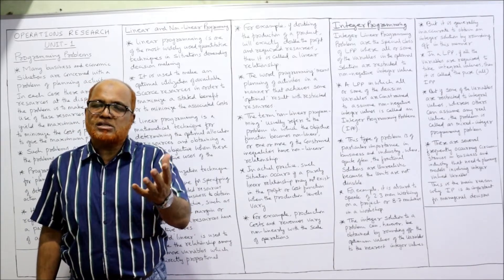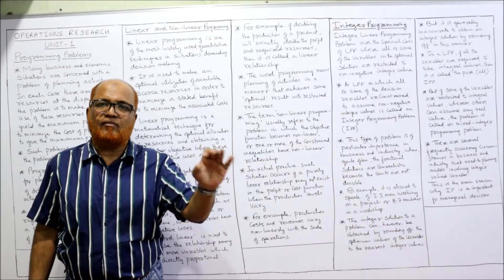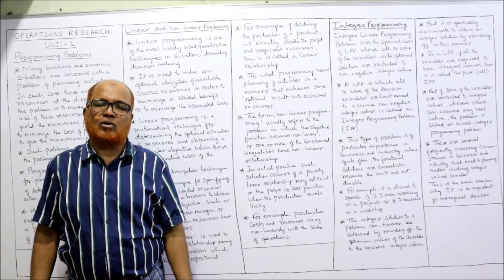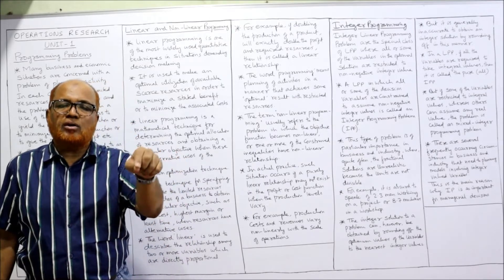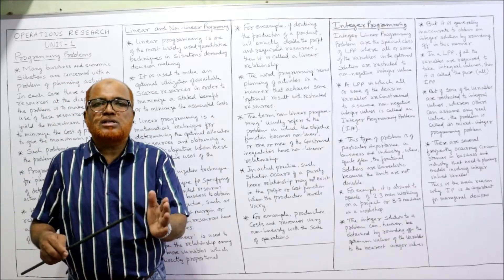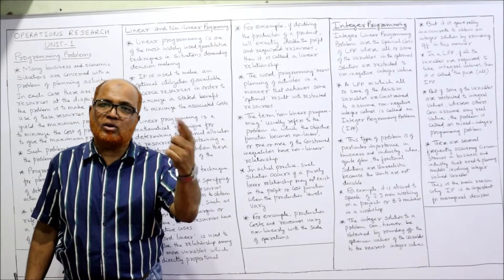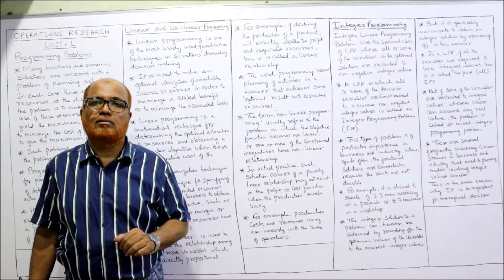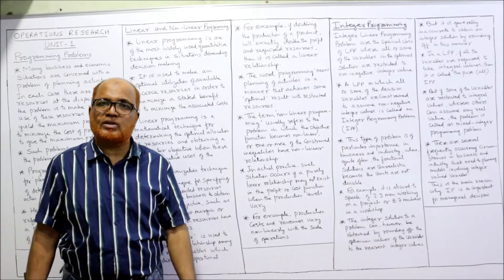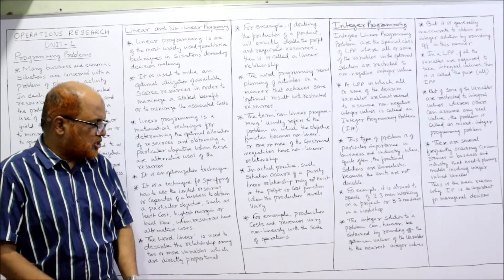Cost consists of fixed cost and variable cost. The fixed cost remains the same whatever the level of activity, but variable cost will change. If we combine fixed cost and variable cost we get total cost, which will not be proportional to the level of activity. If the level of activity is doubled, the total cost will not necessarily be doubled — it will be lower, so profitability will be more. This is a real practical non-linear situation.